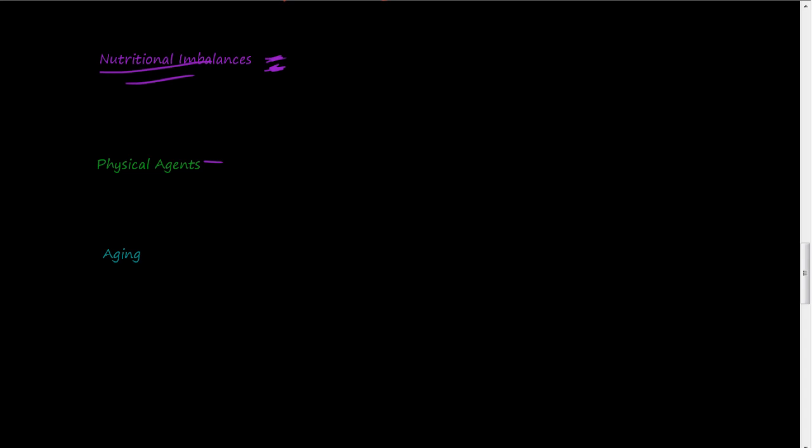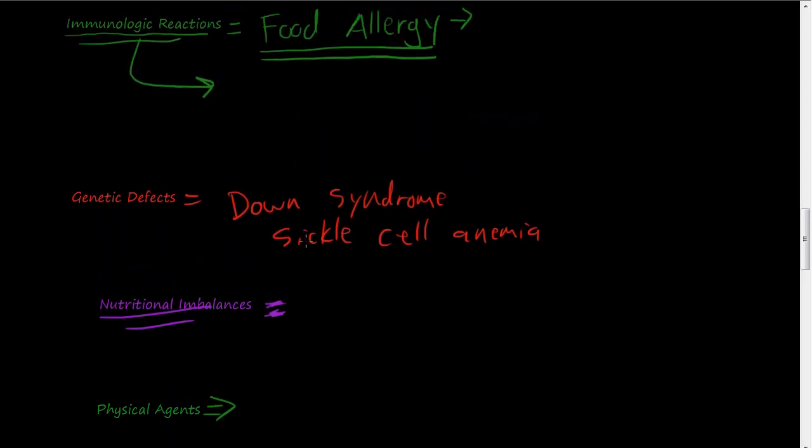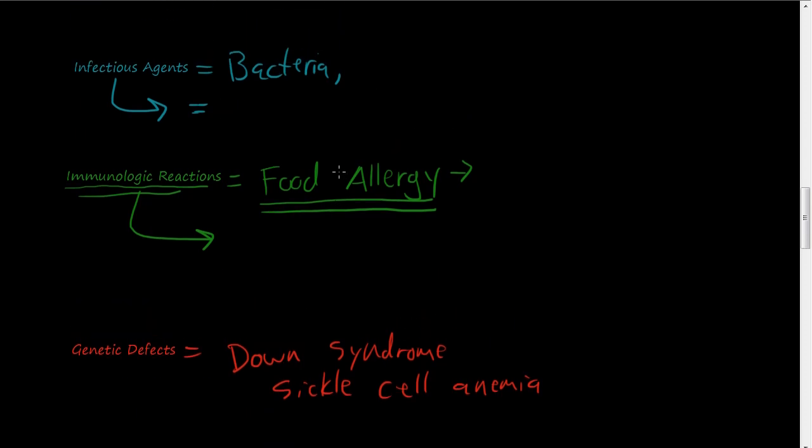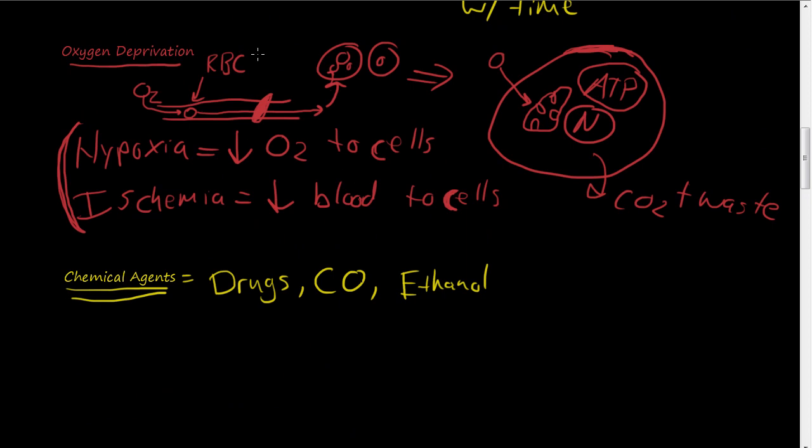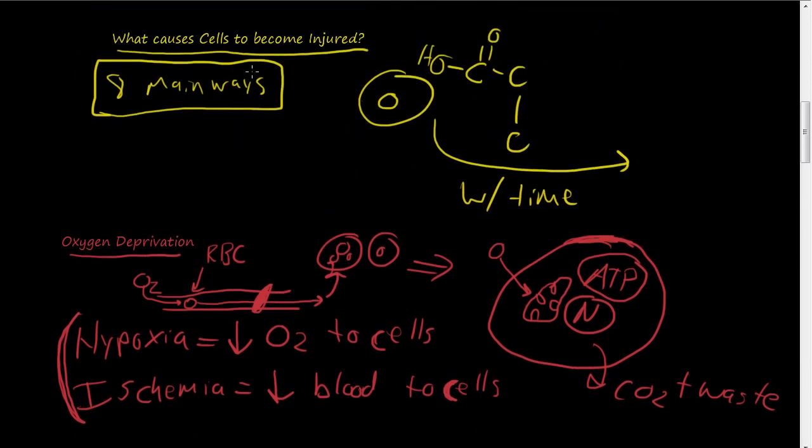Physical agents are any kind of traumas, radiation. Anytime we go get x-rays, we're getting our cells radiated and that's definitely hurting some cells. And then finally aging, we can't live indefinitely and as cells age, we'll talk about this a lot. We'll talk about all these in more detail, but this is just kind of a preview. So the eight common ways are aging, physical agents, nutritional imbalances, genetic defects, immunological reactions, infectious agents, chemical agents, and oxygen deprivation. These are the eight classes by which cells can become injured.